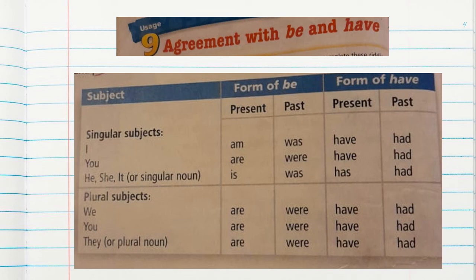That's the singular. Now we have the subject in plural. We means nosotros. We are in present, we were in past. You, meaning ustedes, you are in present, you were in past. They means ellos, for a plural noun — the students, the people. They are in present, they were in past. That's for the verb be.